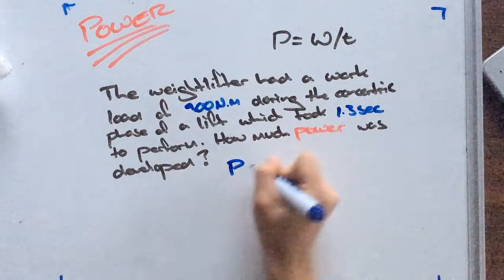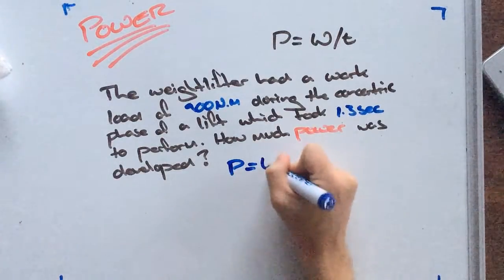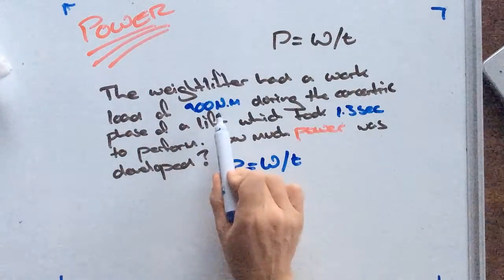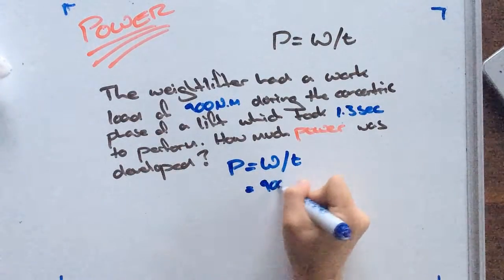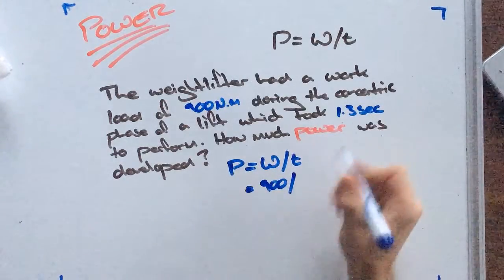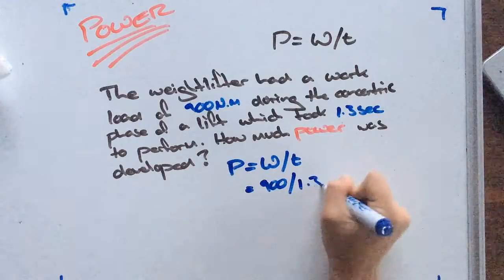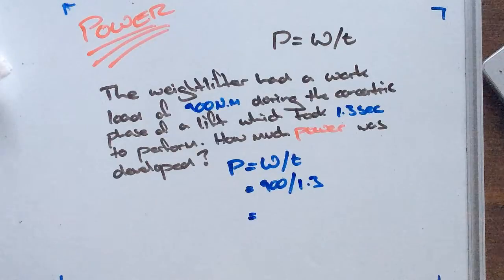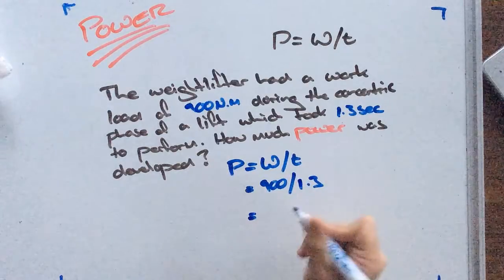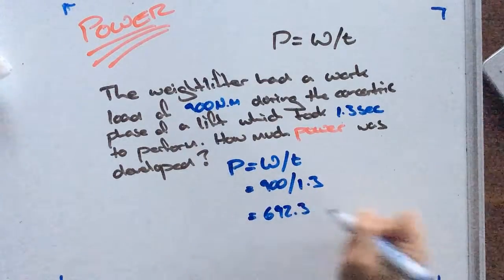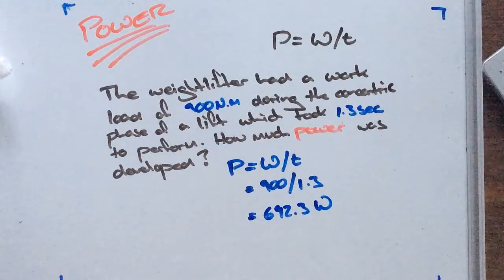Power is equal to work divided by time. We're given our work — a workload of 900 Newton meters — divided by the time it took, so 1.3. And if we divide 900 by 1.3, we get 692.3, and our units are watts.